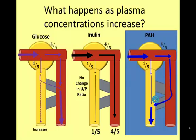As the plasma concentration of PAH rises, the transport maximum of 72 mg per minute for secretion may be exceeded. At this point, some of the PAH will not be secreted as the blood passes through the peritubular capillaries and will remain in the plasma compartment. At extremely high concentrations of glucose or PAH, the clearance becomes closer to the clearance of inulin.